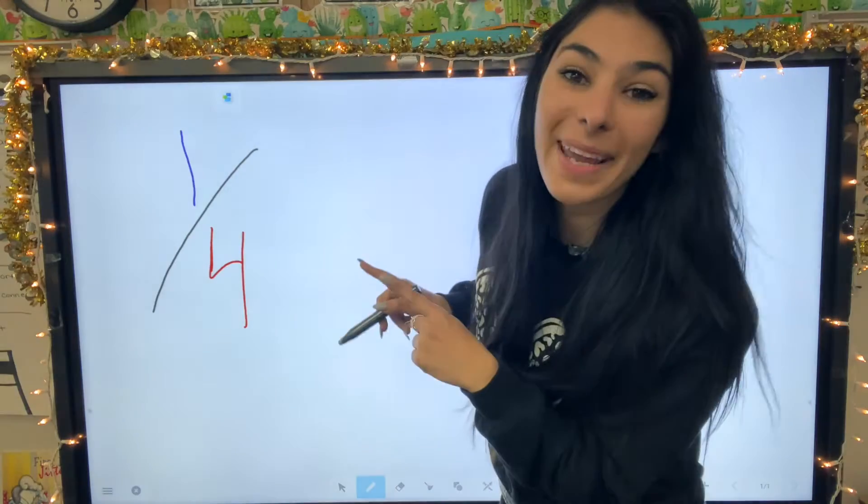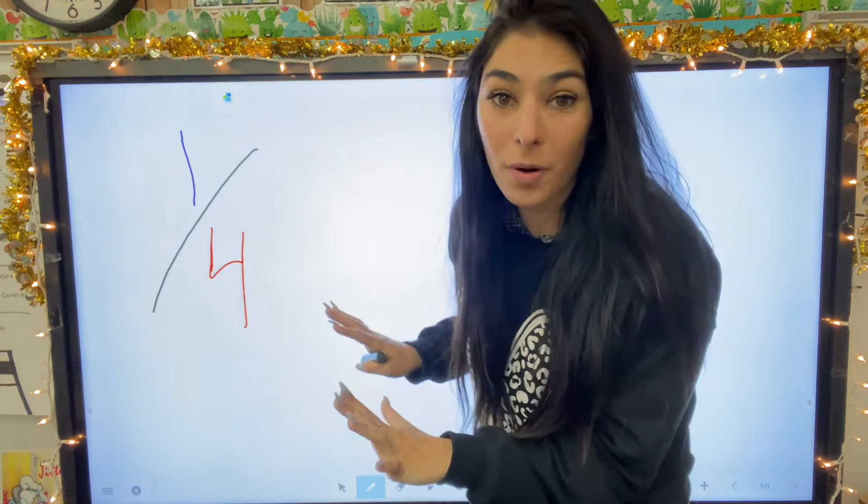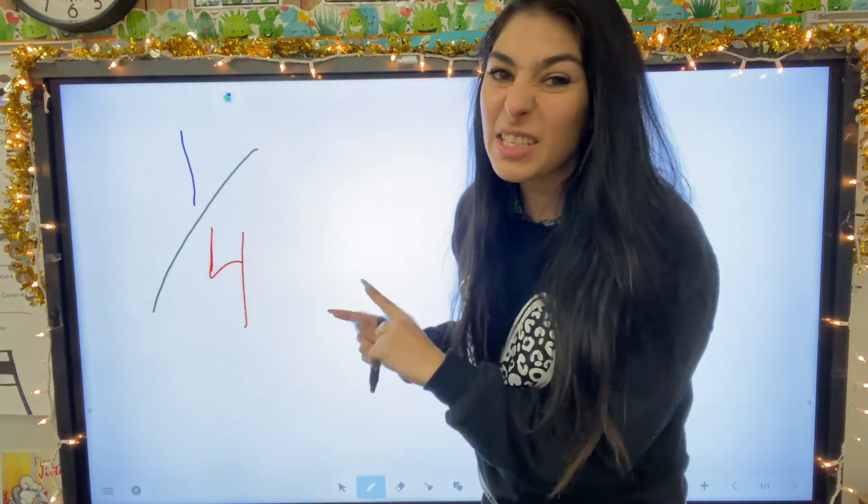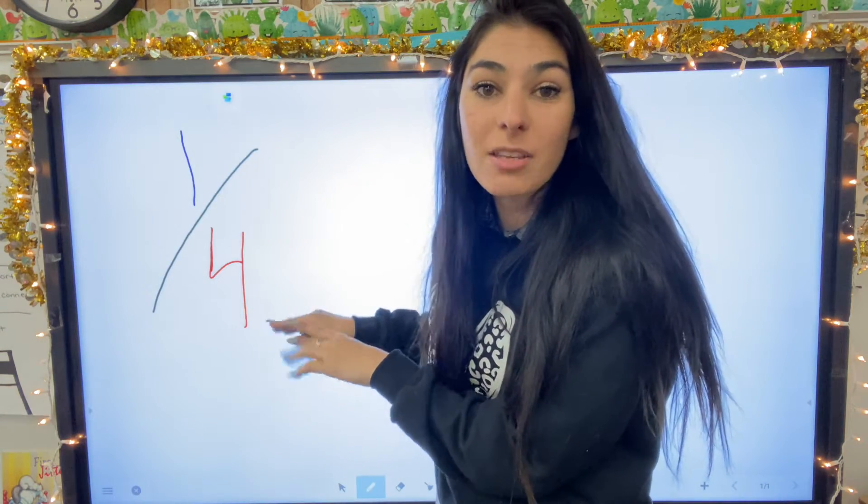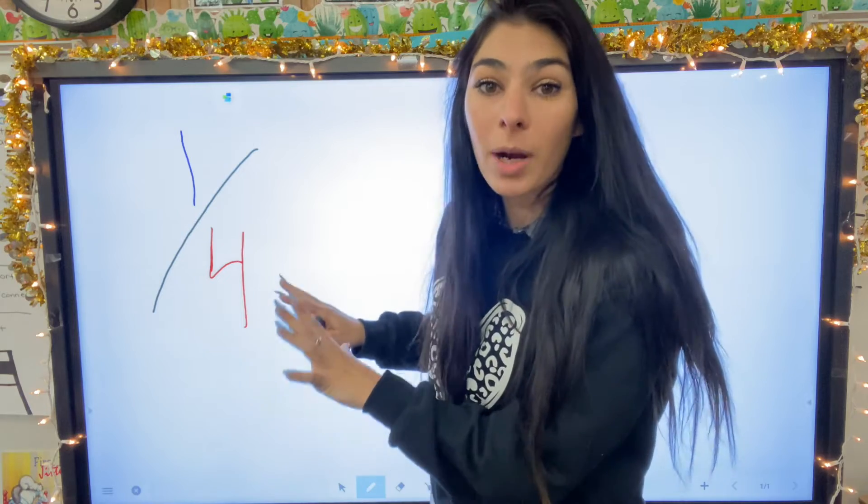Let's do another one. Okay, this fraction is one fourth, one over four. This is a really common one. First, we're going to look at the denominator. The denominator in this fraction is four. That means that there are four pieces.